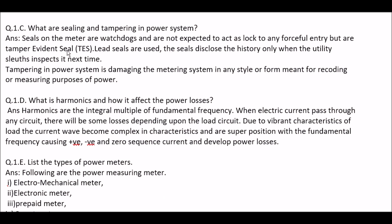Next question: what are sealing and tampering in a power system? Answer: seals on the meter are not expected to act as a lock to any forceful entry, but are tamper-evident seals (TES). Lead seals are used; the seals disclose the history only when the utility inspector inspects it next time. Tampering in a power system is damaging the measuring system in any style or form made for recording or measuring purposes of power.